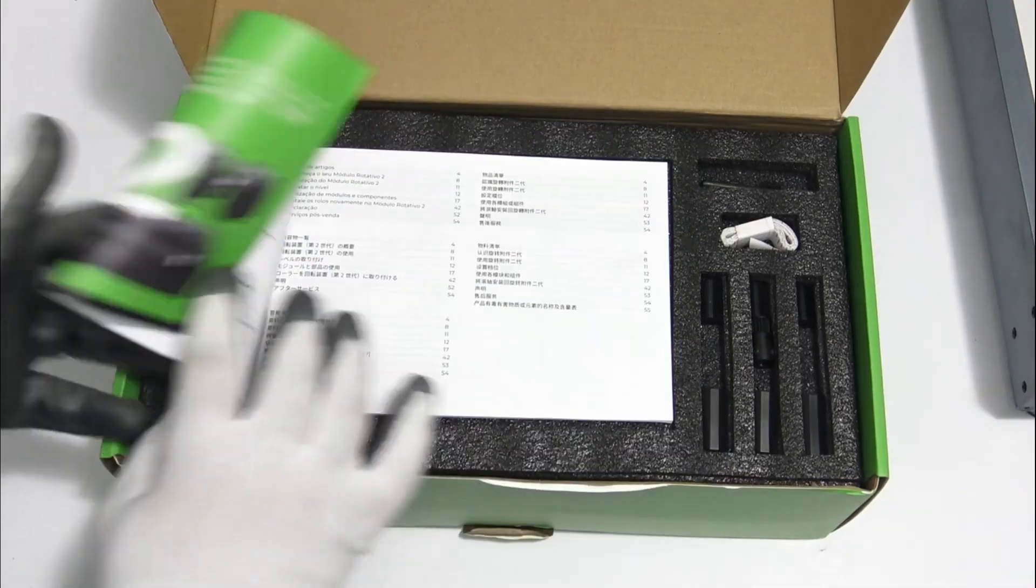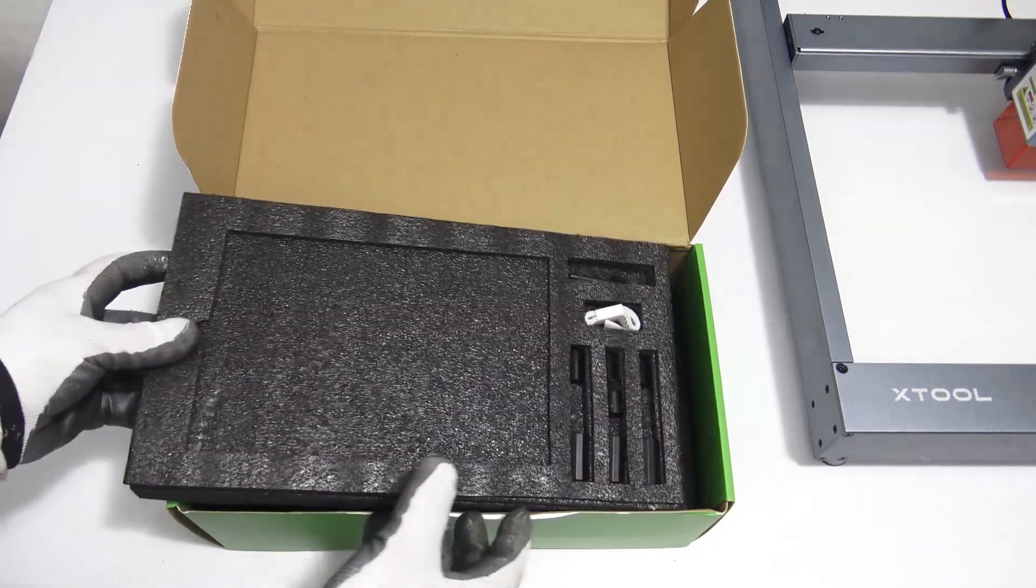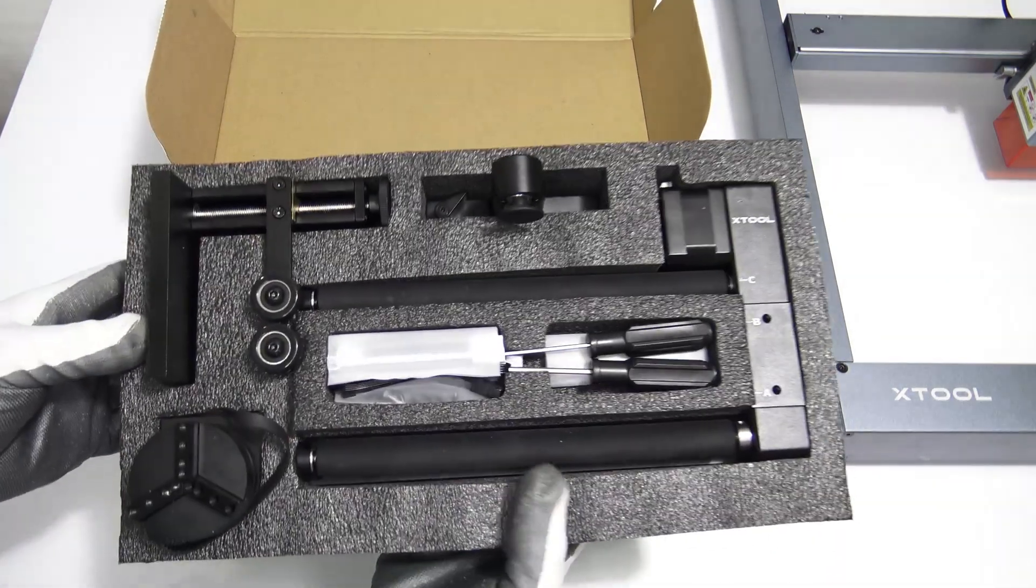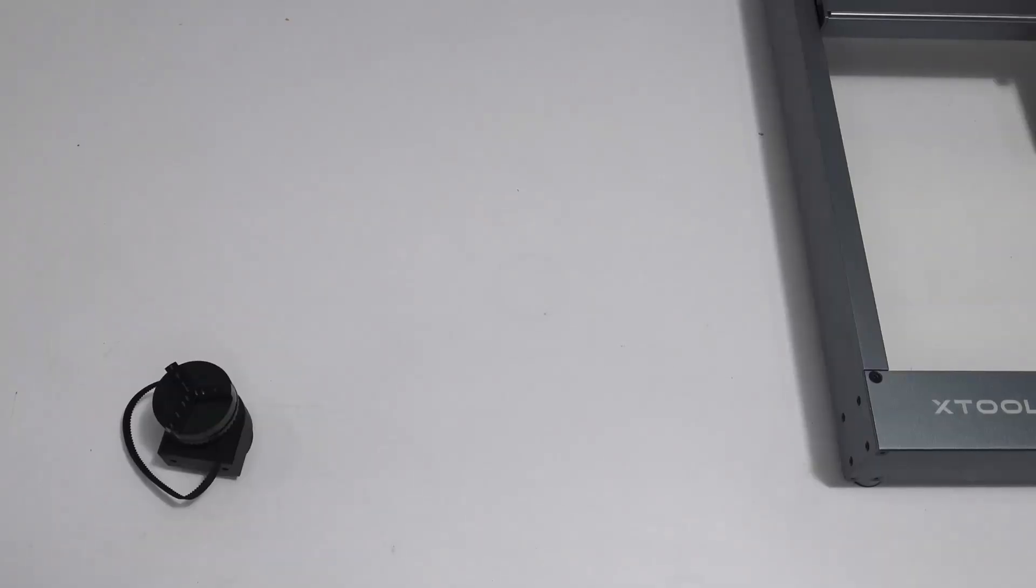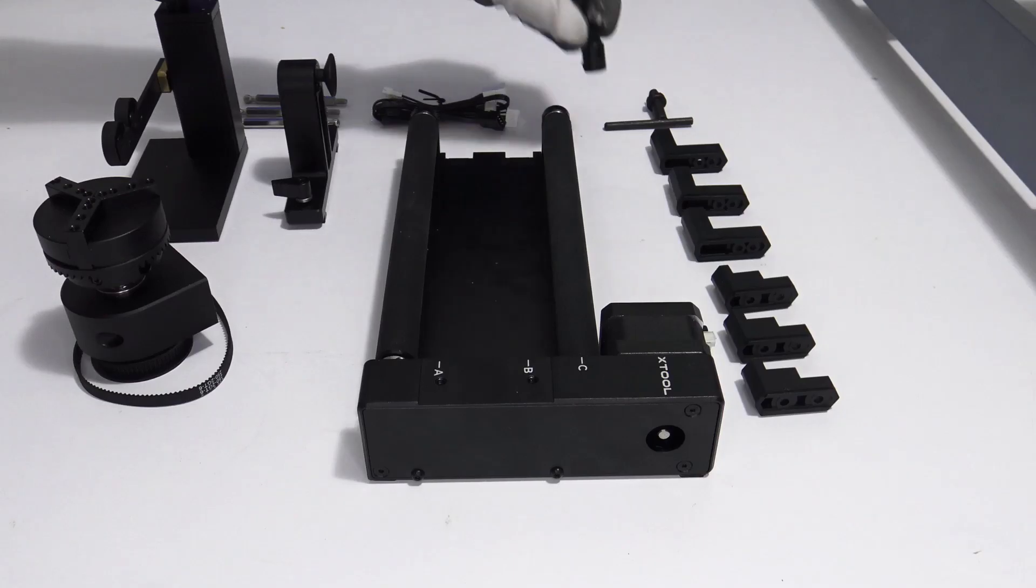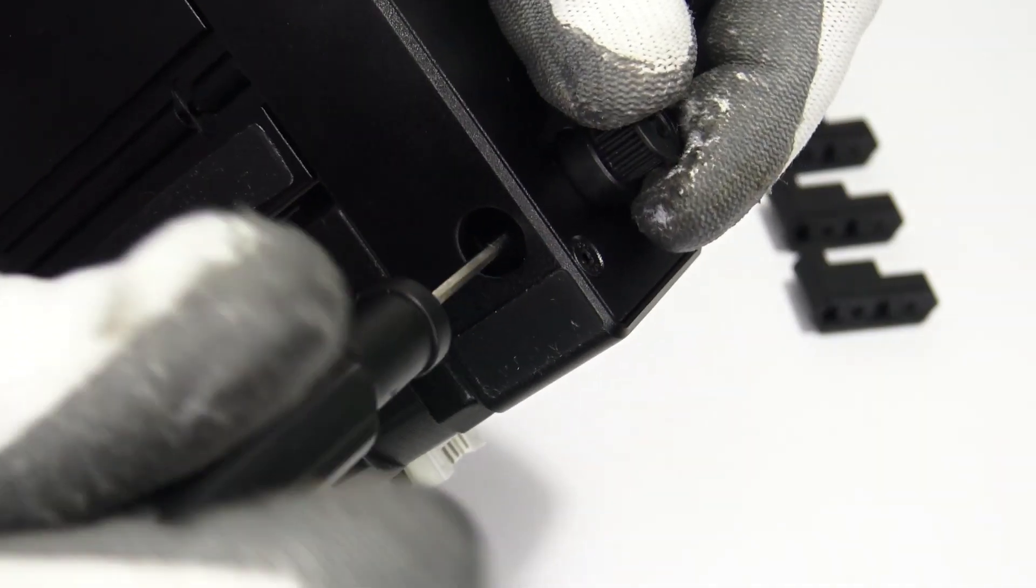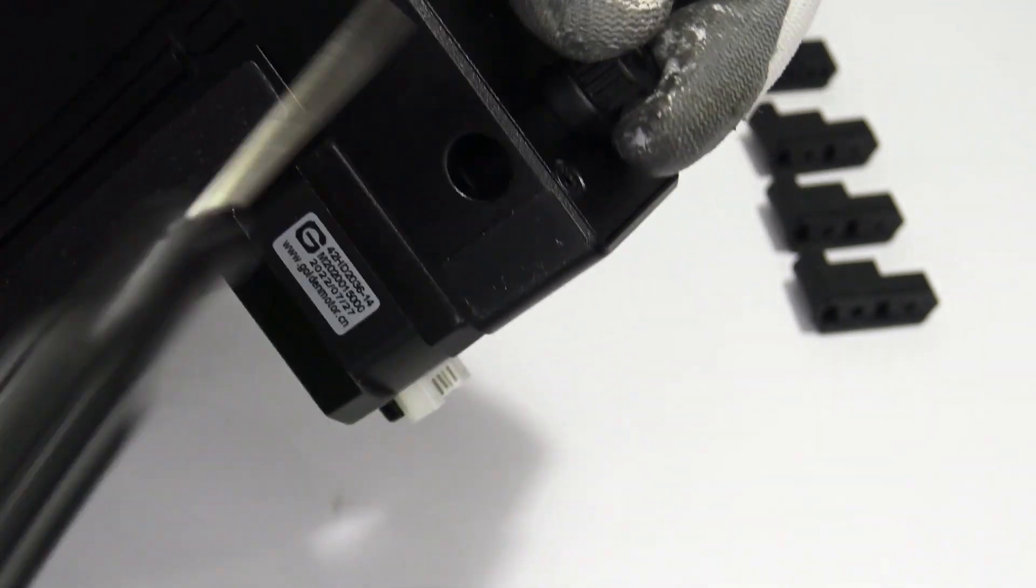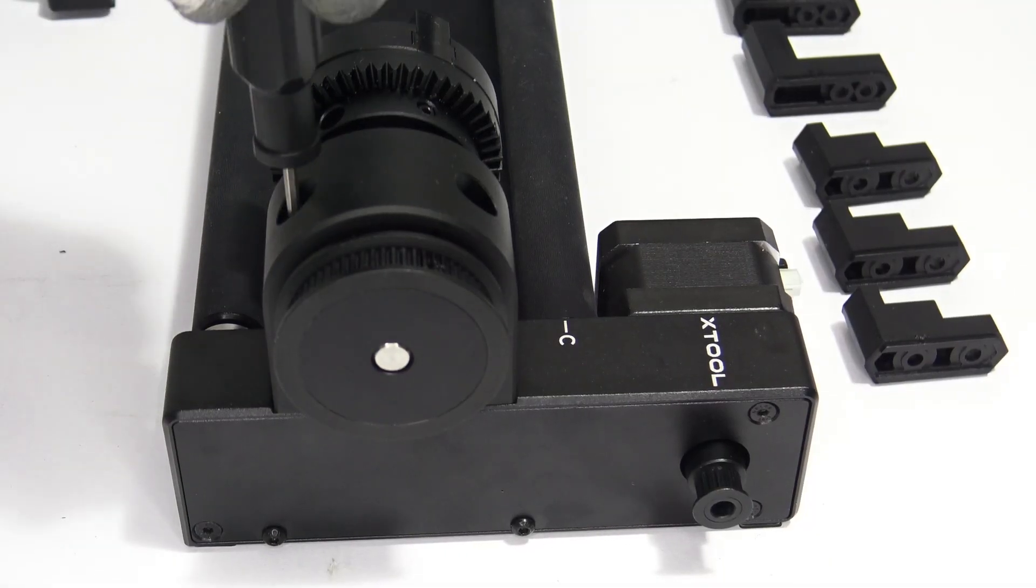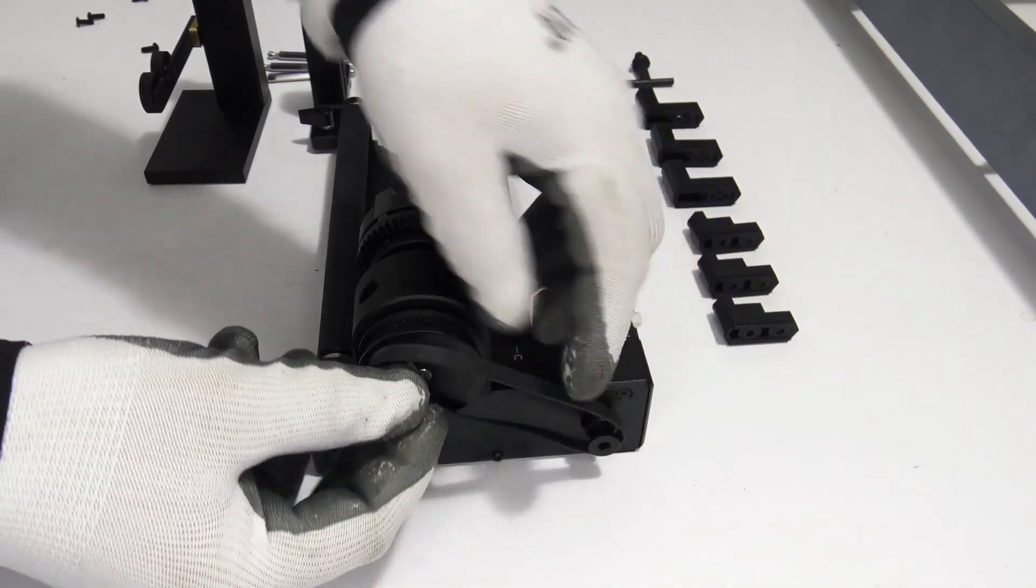Together with the machine, you can also order the X-Tool RA2 Pro 4 in one chuck style rotary roller attachment which can be used to engrave on cylindrical and spherical objects.